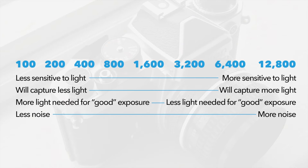If you bump your ISO up higher and higher, you're going to get the ability to have more light come into your sensor — it'll capture more light. You're going to have less light needed for a good exposure, but you will have more noise, and that is a drawback.